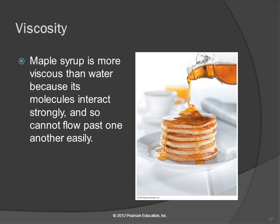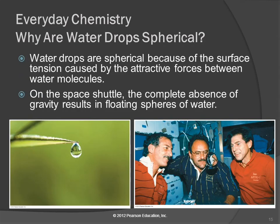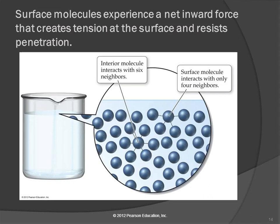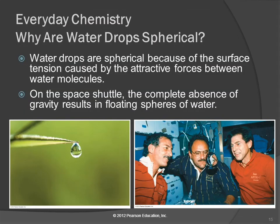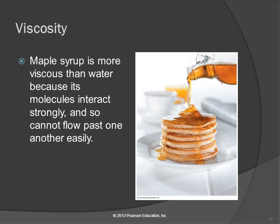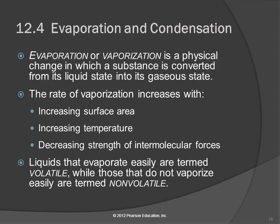Jumping back to surface tension briefly: a substance that has stronger intermolecular forces is going to have higher surface tension. Water has high surface tension. Something like gasoline has weaker intermolecular forces, so the surface tension is less — that's why you can't float a paperclip on gasoline. Don't go home and try that with gasoline; feel free to try the paperclip on water. Back to viscosity — maple syrup is more viscous than water because the molecules are so attracted to each other they don't slide very well, so it pours slowly. Any questions about surface tension and viscosity?